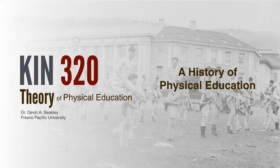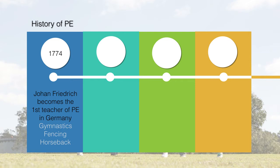Welcome everybody to Kinesiology 320, Theory of Physical Education. I want to give you a little review of the history of physical education. Physical education stems back to the 1700s. The very first physical education teacher who was identified as such was Johan Friedrich, and it happened in Germany. Johan's instructional approach focused on gymnastics, fencing, and horseback riding — mainly recreational activities. In 1774, Johan became what we consider the very first physical education teacher.